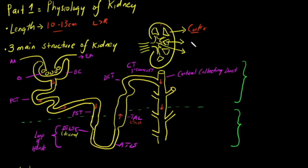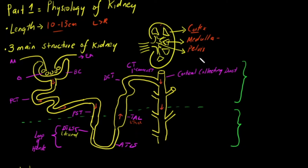The inner region consists of what looks like pyramids — triangular shapes — and this is what we call the medulla. The medulla contains your pyramids, which surround your pelvis. The medulla also houses your loop of Henle and your collecting ducts. Finally, the innermost part is the pelvis — the central cavity where urine is deposited after blood has been cleansed, and it is continuous with your ureter.